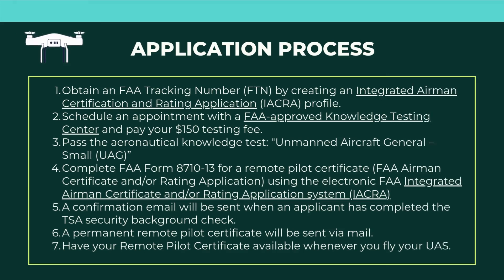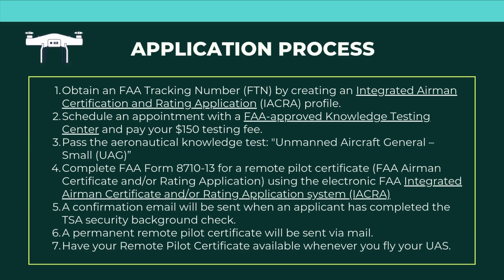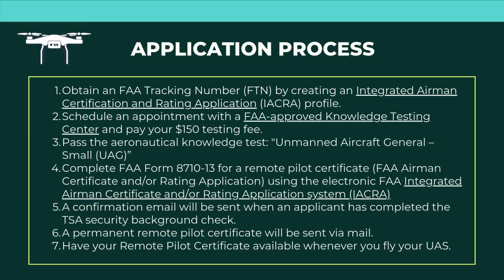All of this is outlined on the FAA's website, but we'll briefly go through it. First and foremost, you'll need to obtain an FAA tracking number by creating an Integrated Airman Certification and Rating Application profile, and you do that prior to registering to take your test. Once you've got that set up, schedule an appointment with an FAA-approved Knowledge Testing Center, pay your $150 testing fee, and make sure you have a government-issued photo ID.